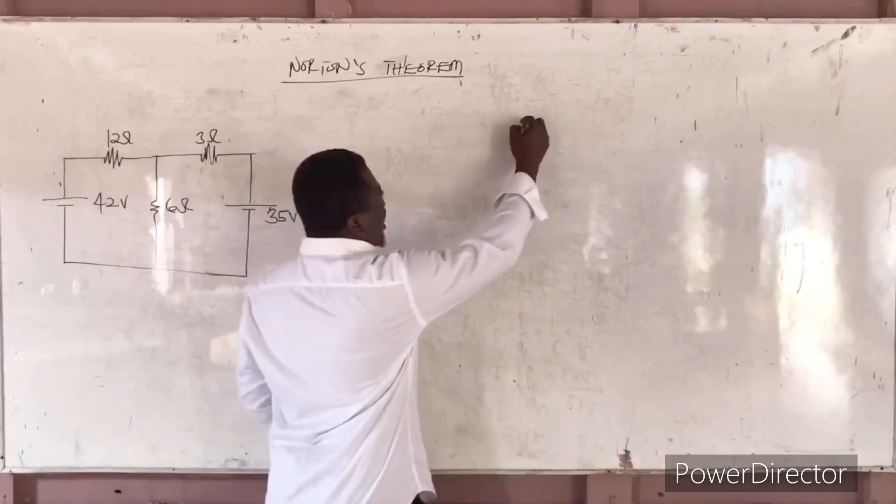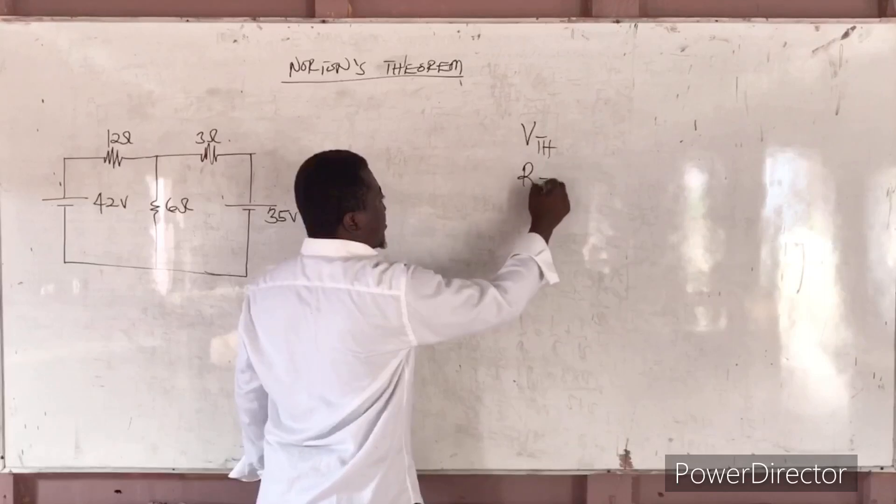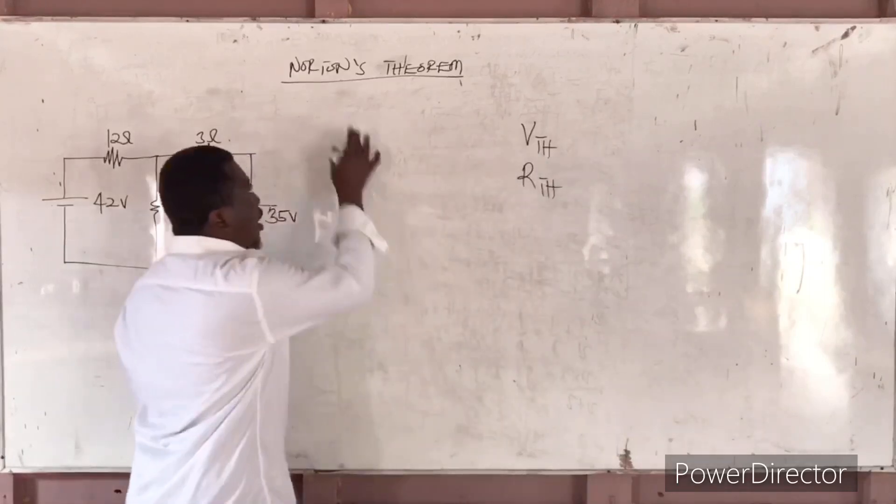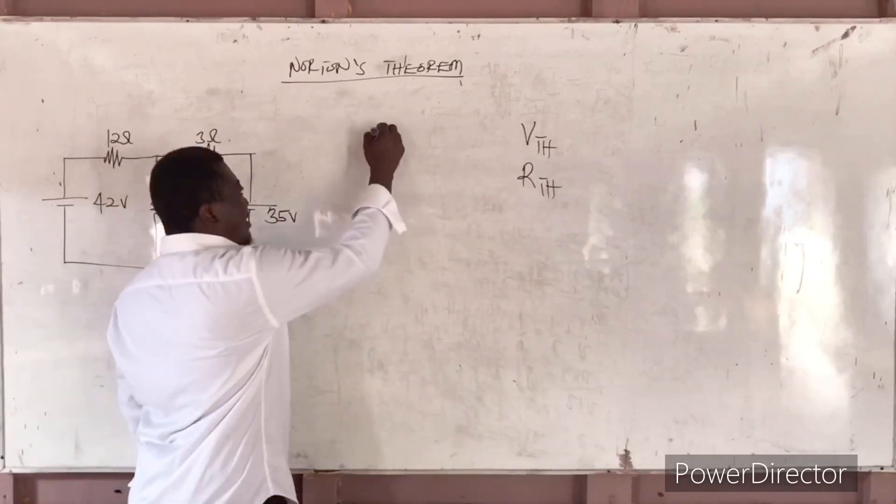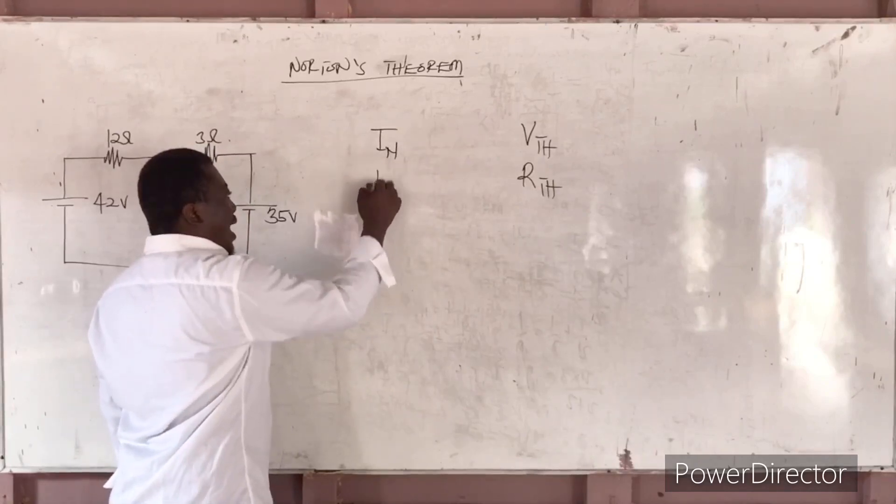In Thevenin, my brother told you that you need VTH and RTH. But in Norton, we need IN and RN.